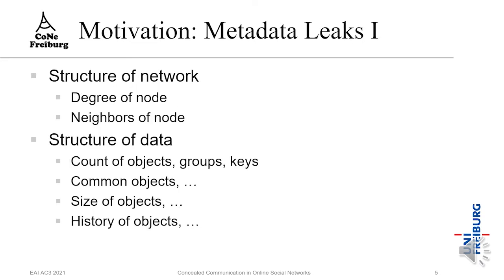From these and other findings, we can compile a list of possible metadata leaks. Even with encrypted communication, privacy can still be attacked. One category is analysis of network structure: the degree of a node — how many friends or contacts users have — and the neighbors of a node, including how many contacts neighbors have and whether there are common neighbors within a group.